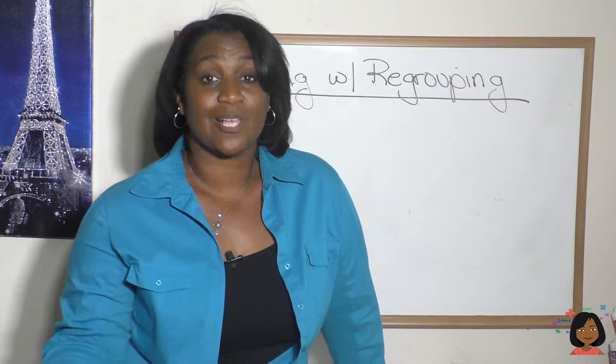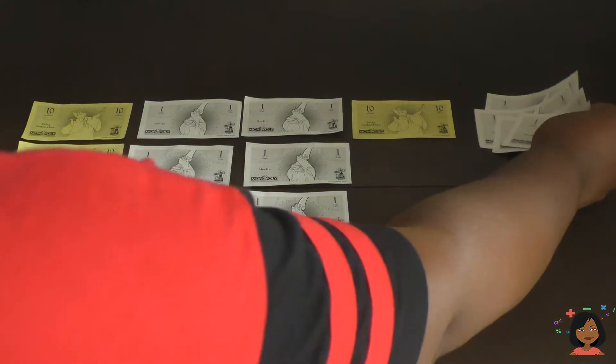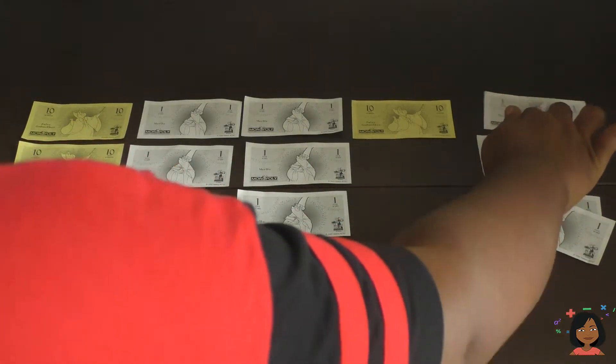Let's take a look at what this looks like with actual dollars. She earned $38, that would be three tens and eight ones, but then she earned $14, so another ten and four ones.